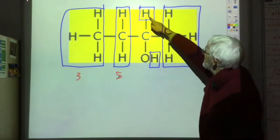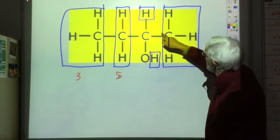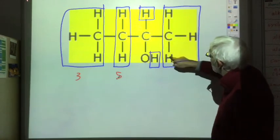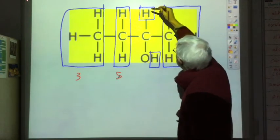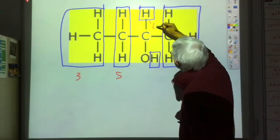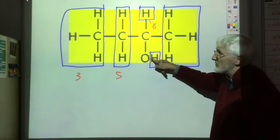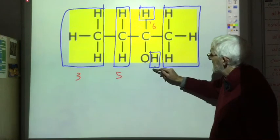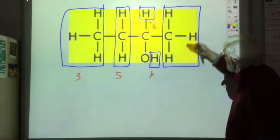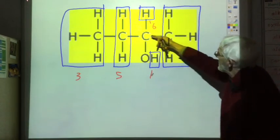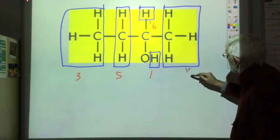For this CH hydrogen, the neighbouring carbon has one, two, three, four, five hydrogens on neighbouring carbons, so that will be split into six (a sextet). The OH hydrogen does not get split, so that'll be a singlet. Finally, the peak due to the right-hand CH3 hydrogens: the neighbouring carbon has one hydrogen, so this will be split into a doublet.